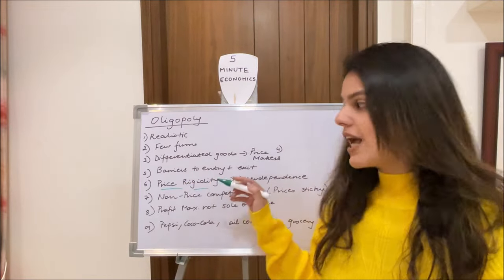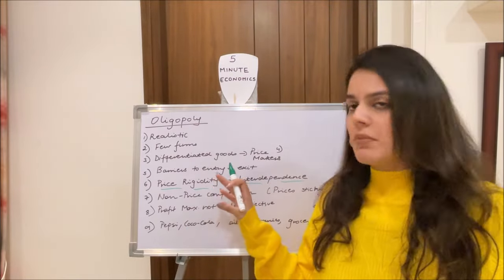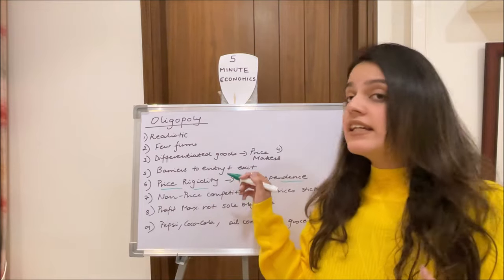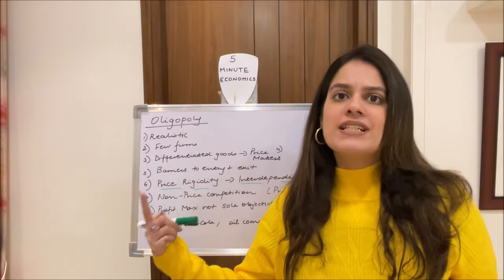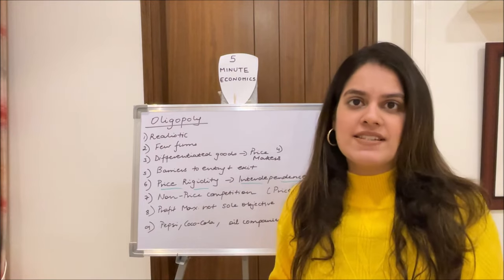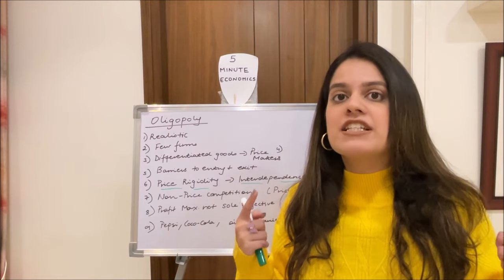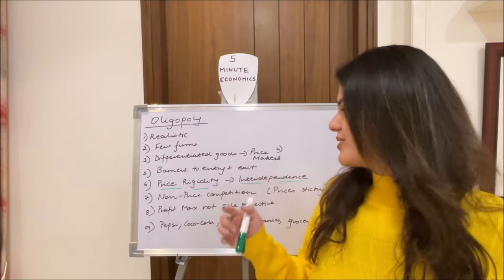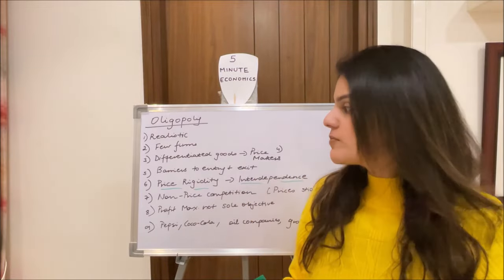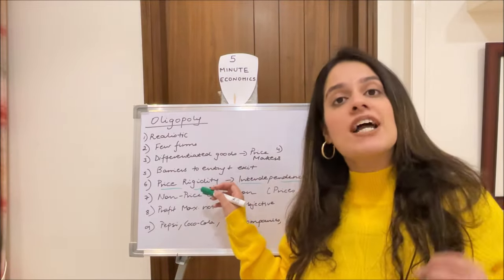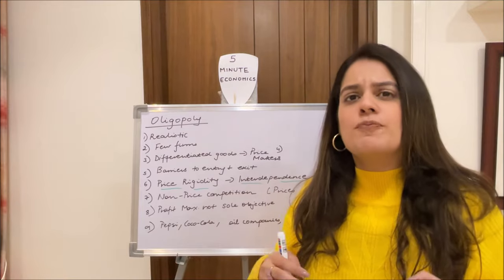Price rigidity is the very base on which the kinked demand curve is established. Interdependence is a key feature of an oligopolistic market. When firms set their price, they must think about what rival firms will do if they increase or decrease their price. They cannot independently set price without considering the reactions of other firms in the market, creating interdependence.